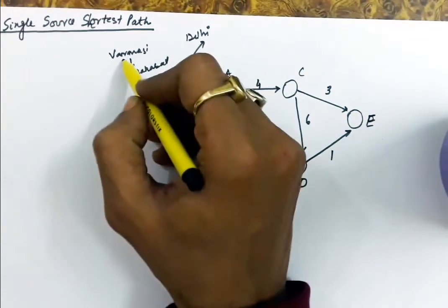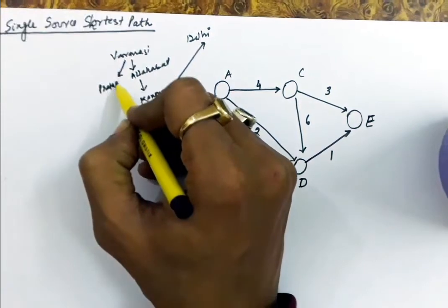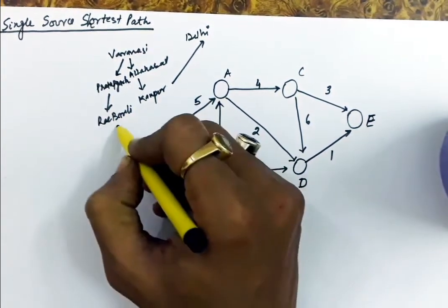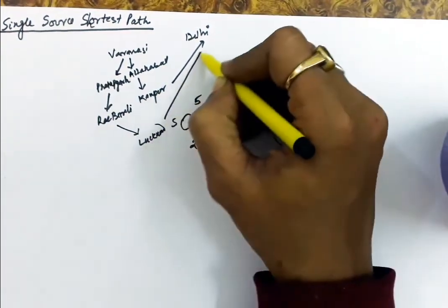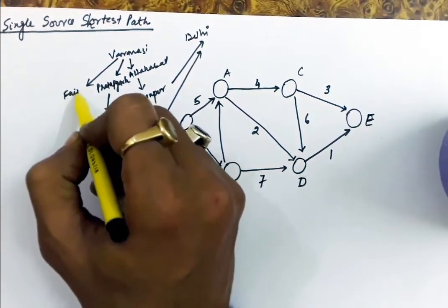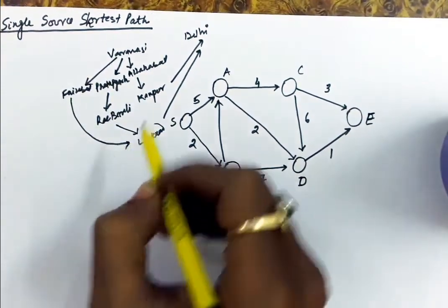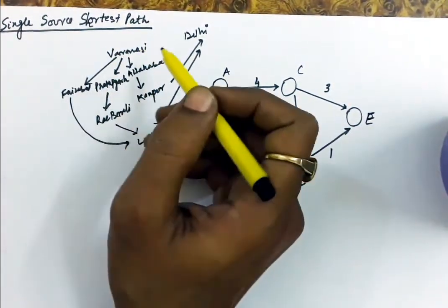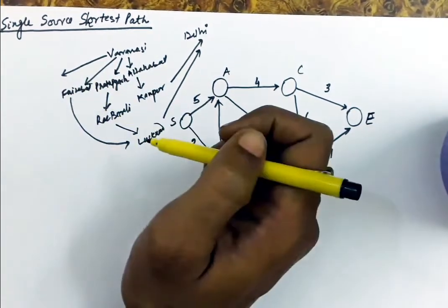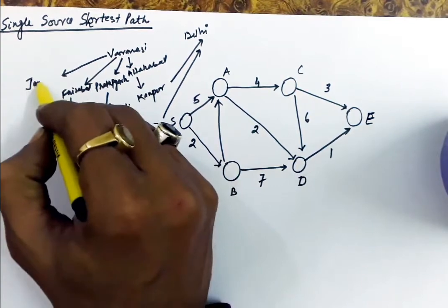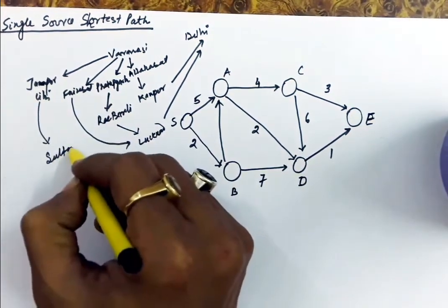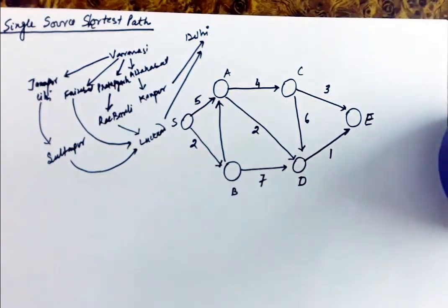There is another path: you can come from Varanasi to Pratapgarh, then from Pratapgarh to Rae Bareli, from Rae Bareli to Lucknow, and then Lucknow to Delhi. Another path goes from Varanasi to Faizabad, then Faizabad to Lucknow, and then Lucknow to Delhi. Yet another path goes through Varanasi to Jaunpur city, then Jaunpur to Sultanpur, then Sultanpur to Lucknow, and finally Lucknow to Delhi.